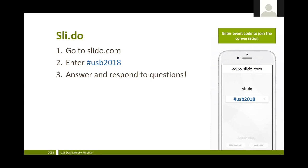To participate in the e-meeting, please take out your mobile phone or tablet and open another window in your mobile internet browser. Enter slido.com into your browser and enter the event code hashtag USB2018. This will allow you to participate in the meeting, answer questions, and submit your own questions, which will be answered at the end of each segment and in the Q&A session at the end of the webinar.